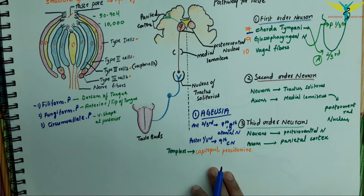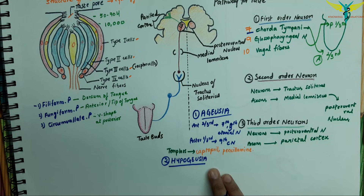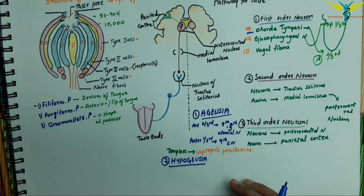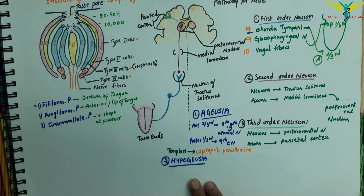The second abnormality is hypogeusia — a decrease in taste sensation due to an increase in threshold for different taste sensations. However, taste sensation is not completely lost in hypogeusia.